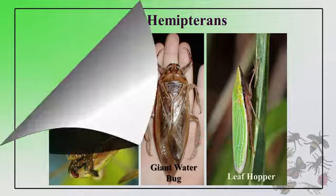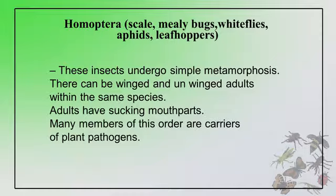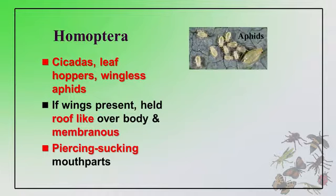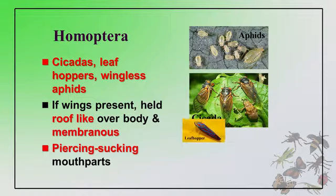Most important among all insects are Homoptera, commonly called scales, mealybugs, whiteflies, aphids, and leaf hoppers. They are pests of different agriculturally important plants and garden plants. With these slides you can identify Homopteran insects: cicadas, leaf hoppers, wingless aphids. If wings are present, they are held roof-like over the body and are membranous. They have piercing-sucking type of mouth parts. Examples shown include aphids, cicadas, and leaf hoppers.